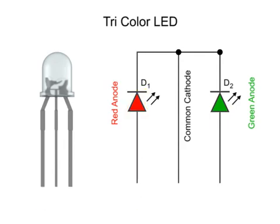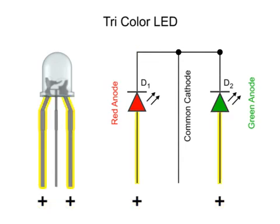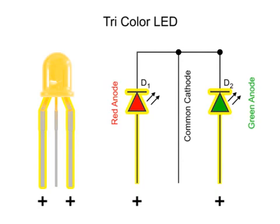However, because the two anodes are wired separately, it is possible to apply positive voltage to both wires. In this case, the LED gives off a third color, a mixture of the two. This color is often an amber color.